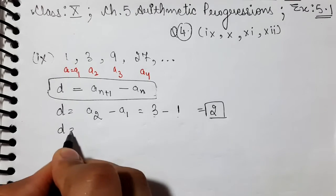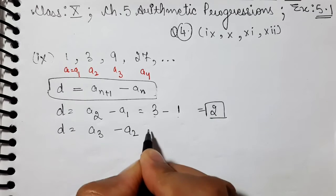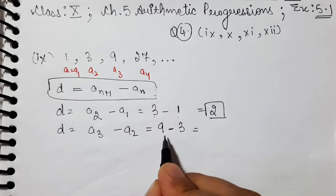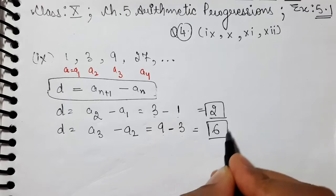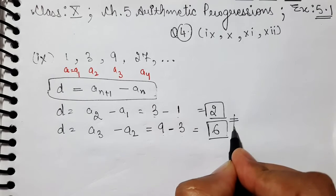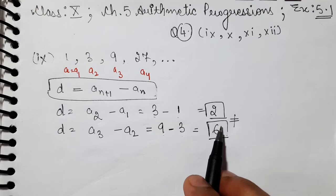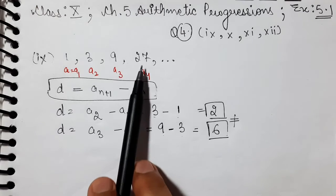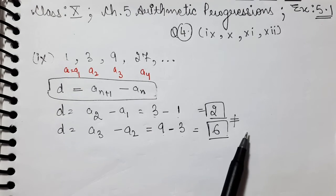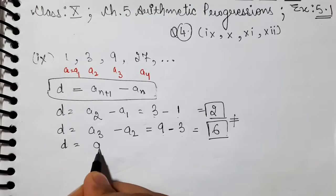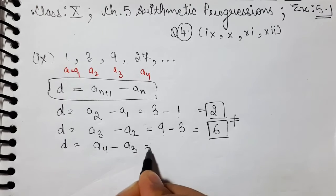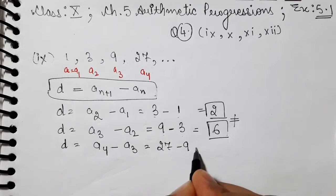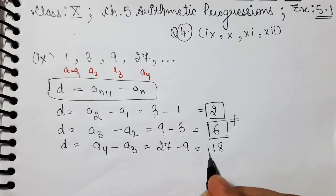Next, we find the third term minus the second term: 9 minus 3 equals 6. So the common difference is not equal. Then A4 minus A3: the fourth term is 27 and the third term is 9, so 27 minus 9 equals 18. This is also not the same number.